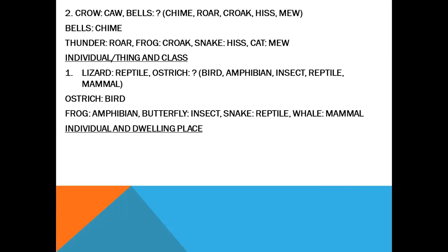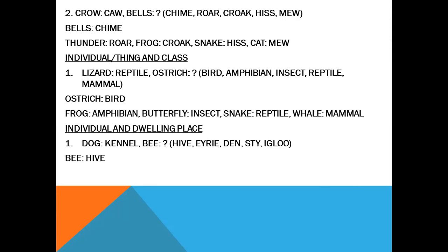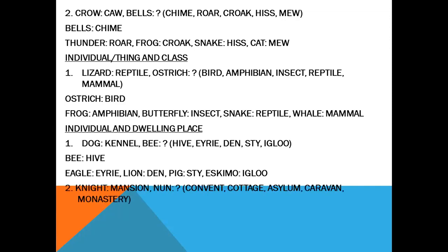Individual and its dwelling place. Frog — pond. Dog — kennel. Bees — hive. Eagle — eyrie. Lion — den. Pig — sty. Eskimo — igloo. Knight — mansion. Nun — convent. Pilgrim — cottage. Asylum. Caravan. Monk — monastery.